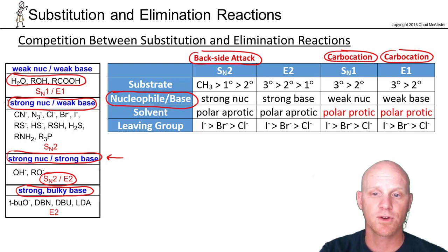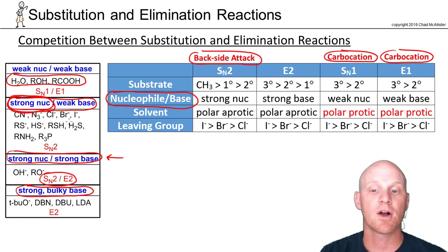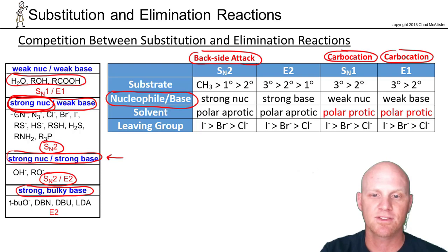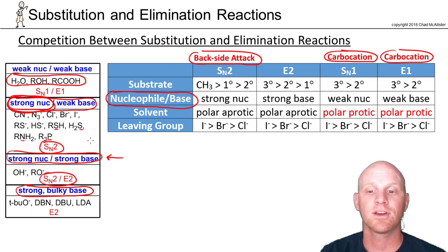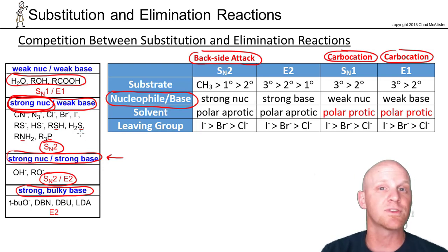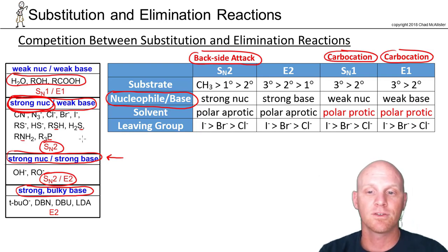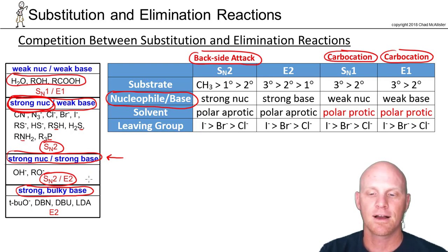Strong nucleophiles that are weak bases can do SN2, but because they're not strong bases, we don't have to worry about competition with E2 — so it's just SN2. Almost all of these have a negative charge: cyanide, azide, chloride, bromide, iodide, and a couple of different types of sulfide. Sulfur, nitrogen, and phosphorus, even without a negative charge, are fantastic nucleophiles — not as good as when negatively charged, but they can definitely do SN2. So if you've got a strong nucleophile that's a weak base, you're doing SN2 in all likelihood.